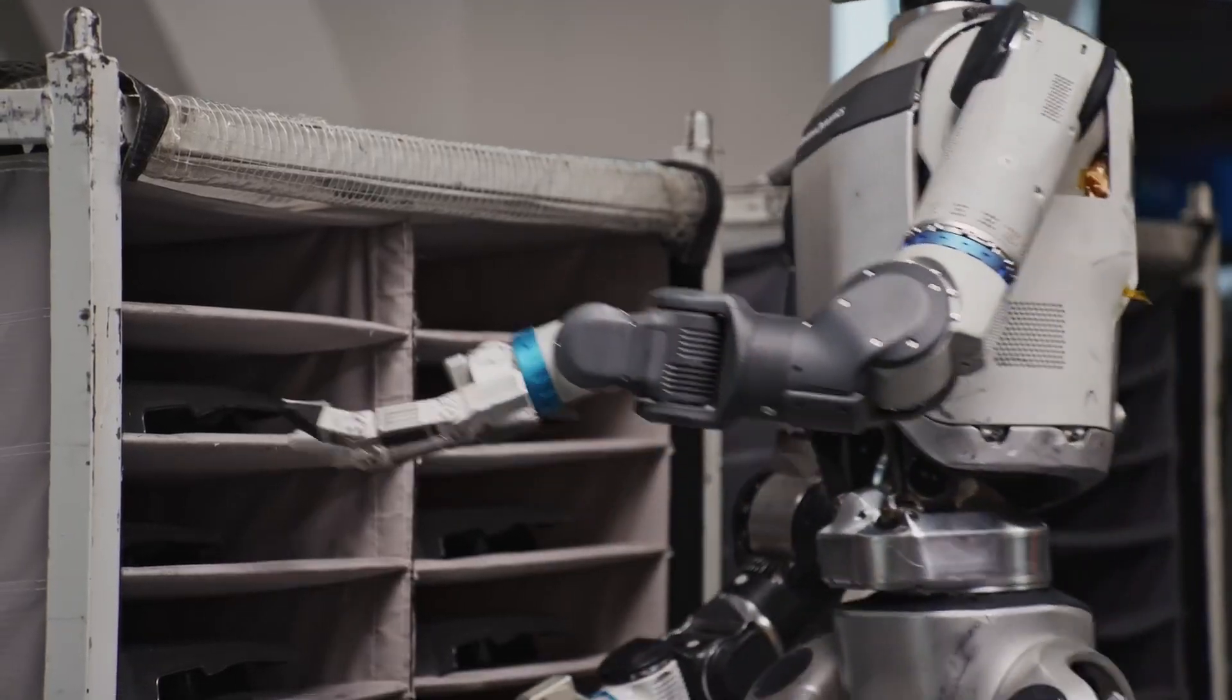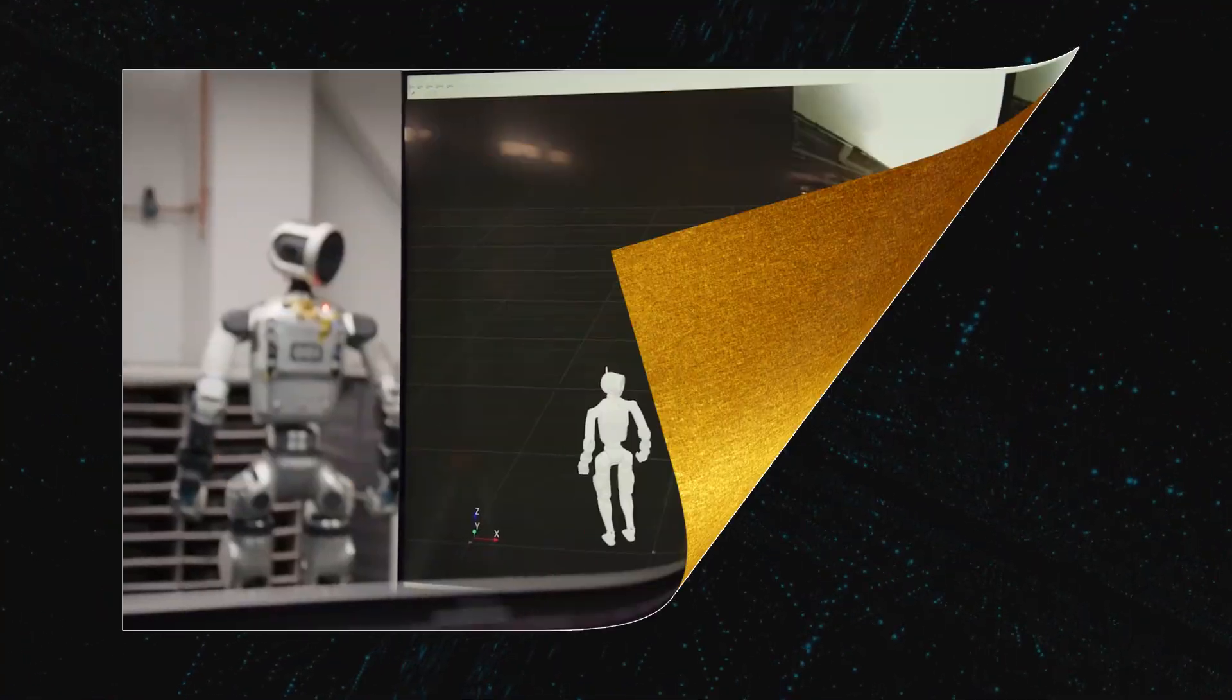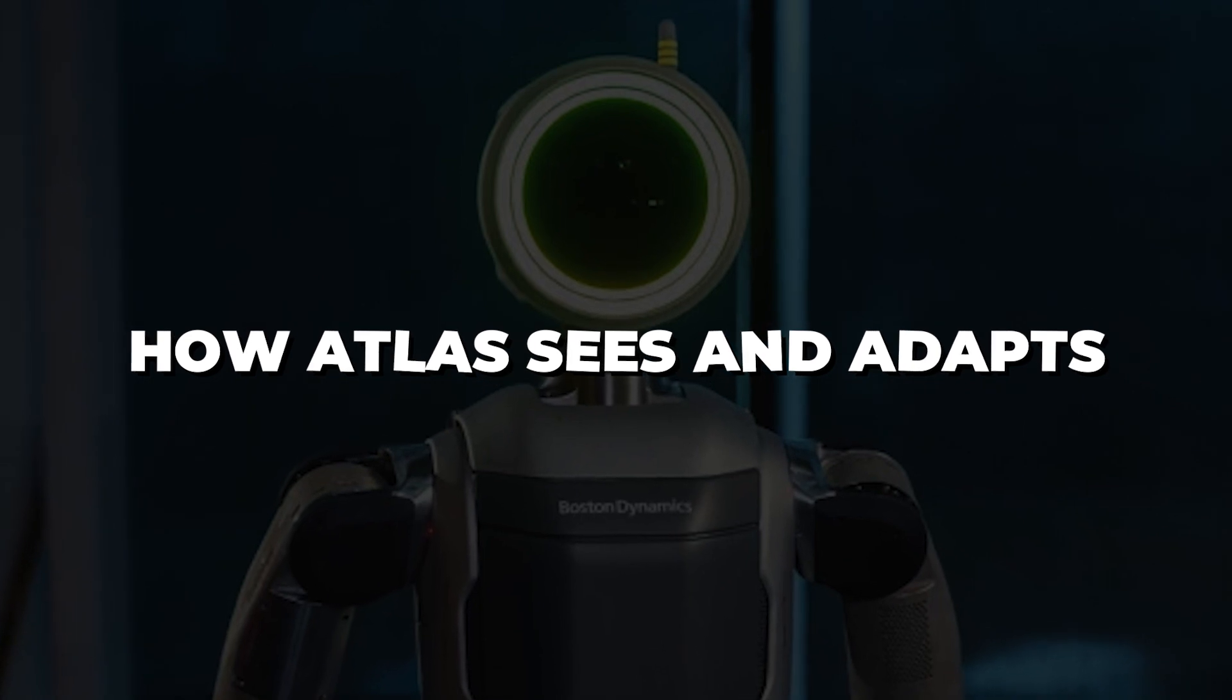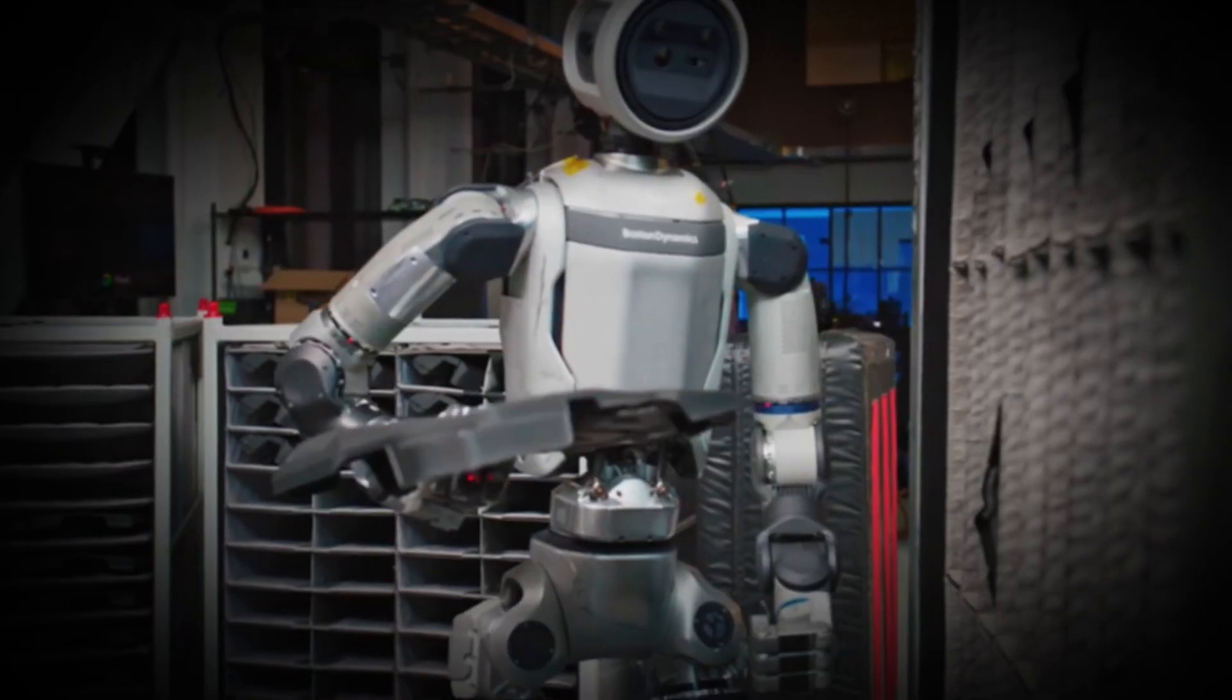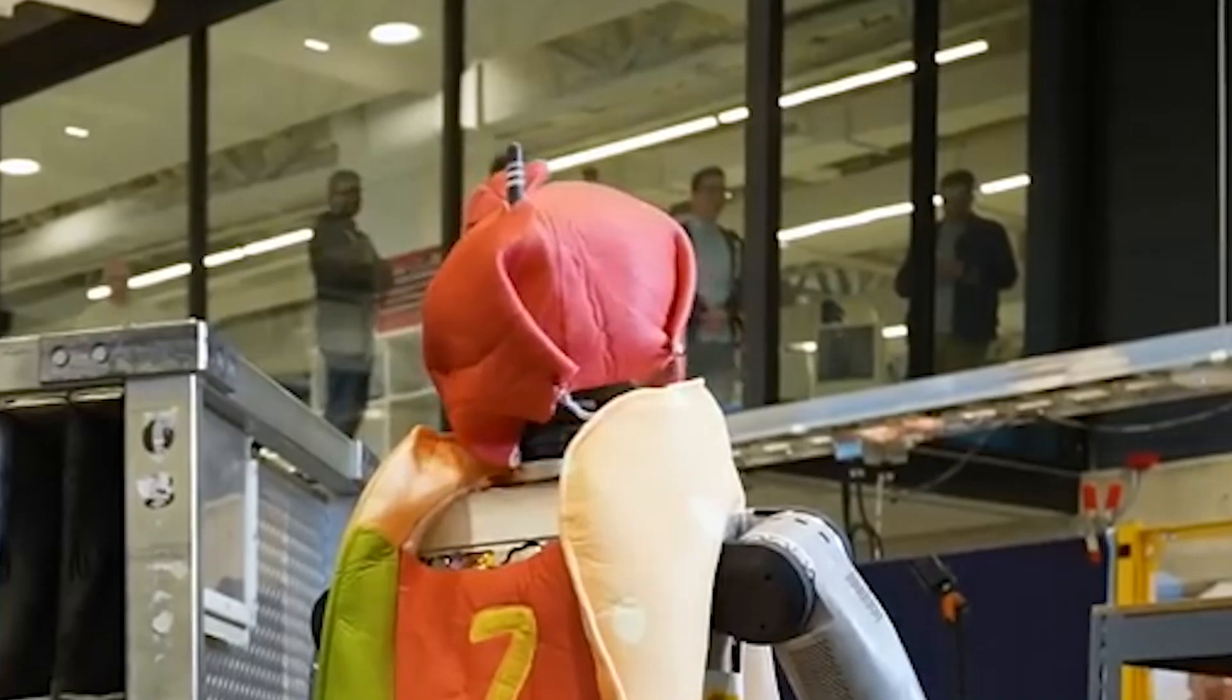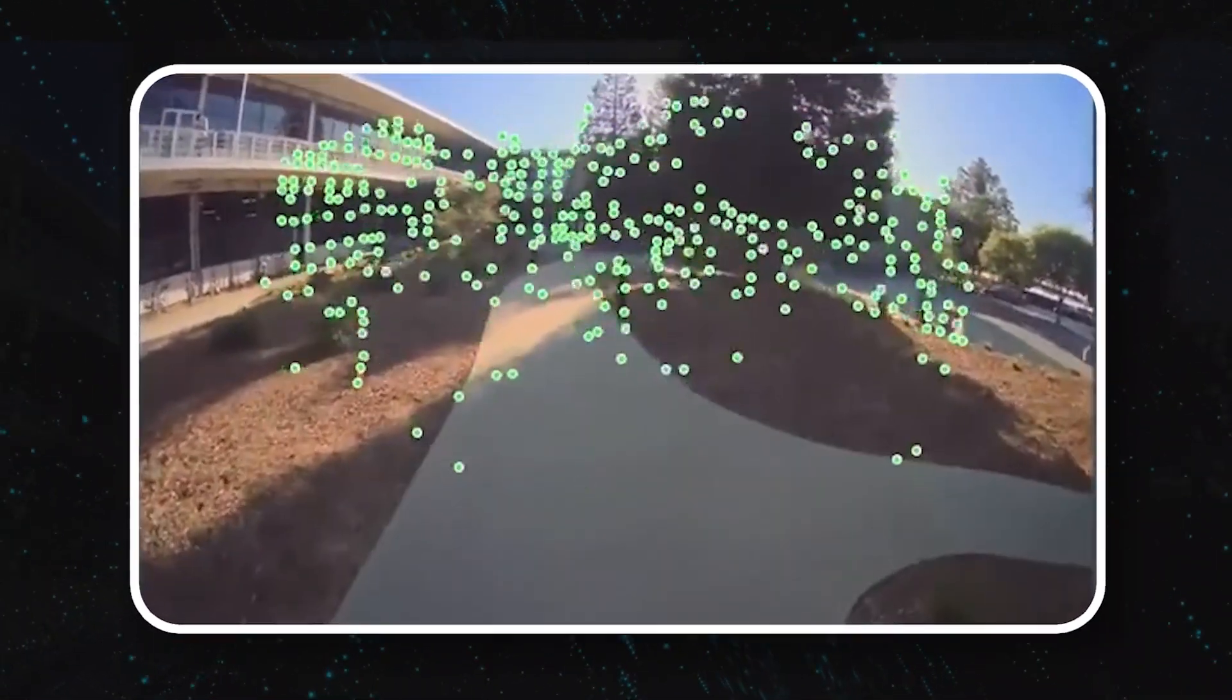The way Atlas handles mistakes is just as important as how it gets things right. That's where its vision system comes in. Rather than just looking at what's in front of it, Atlas actively understands its surroundings in real time. Equipped with the combination of LiDAR and stereo cameras, primarily positioned in its head, to construct highly detailed 3D point clouds.